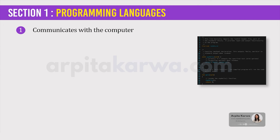These languages are used to design websites, create apps, develop operating systems, control spacecraft and analyze data. Programming languages are necessary because computers can't understand English. So basically, programming languages bridge this gap by helping the programmers translate their commands into something that the computer can understand and execute.